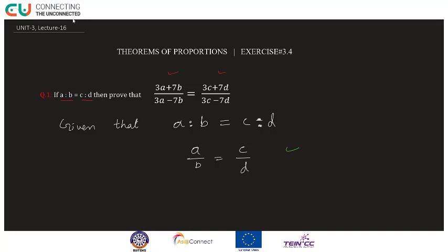Yahan pe dekh lete hain: a ke saath kya multiply ho raha hai — 3 — aur b ke saath kya multiply ho raha hai — 7. Yaani numerator ke saath 3 multiply ho raha hai aur denominator ke saath 7. Isi tarah right hand side check karein: c ke saath 3 multiplied, aur D ke saath 7.